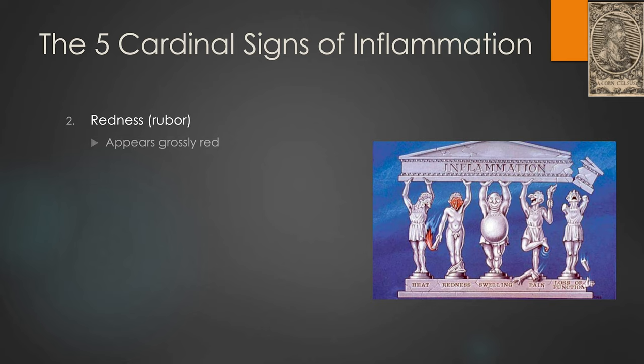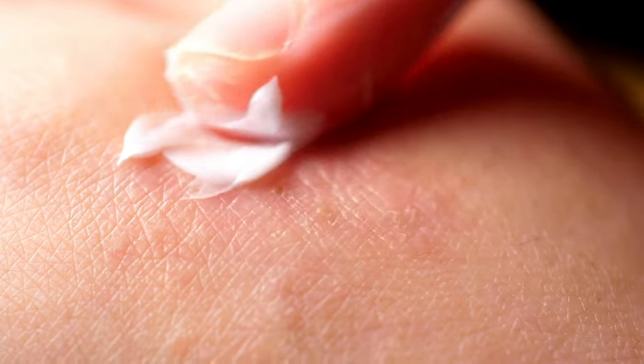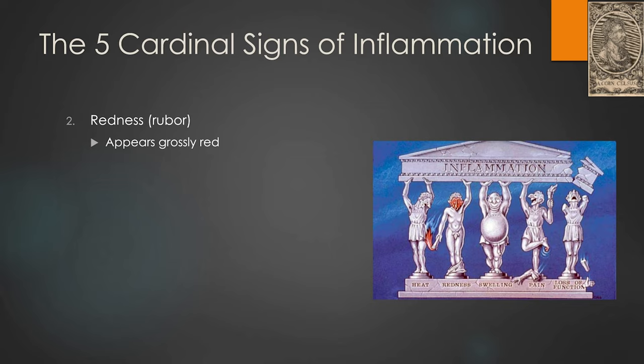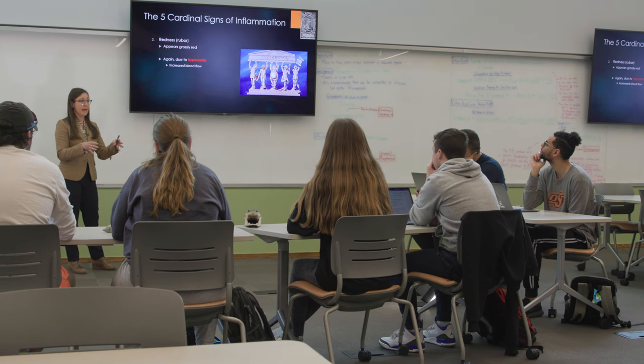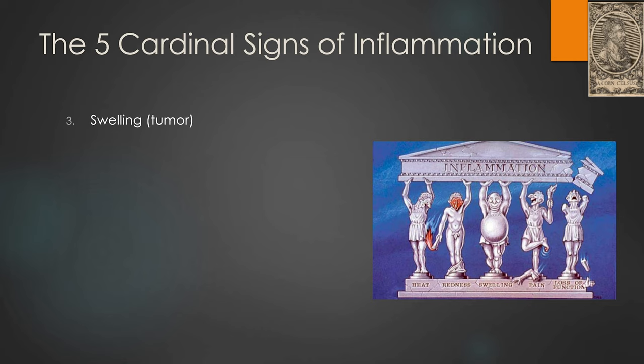The second cardinal sign is redness, or rubor, and this is going to appear grossly red. Again, if you go back to the idea of an abscess or a pimple, it might be red and hot to the touch. This is again due to increased blood flow to that area — we need blood flow there to bring all the good stuff to help fight that infection or cause of injury.